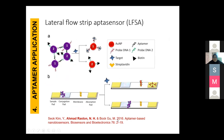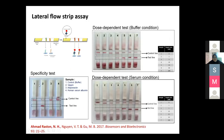I also used a lateral flow strip sensor — the same as a pregnancy test — for easily detecting vaspin using a test strip, and that is the result. So aptamers enable very practical point-of-care detection formats.